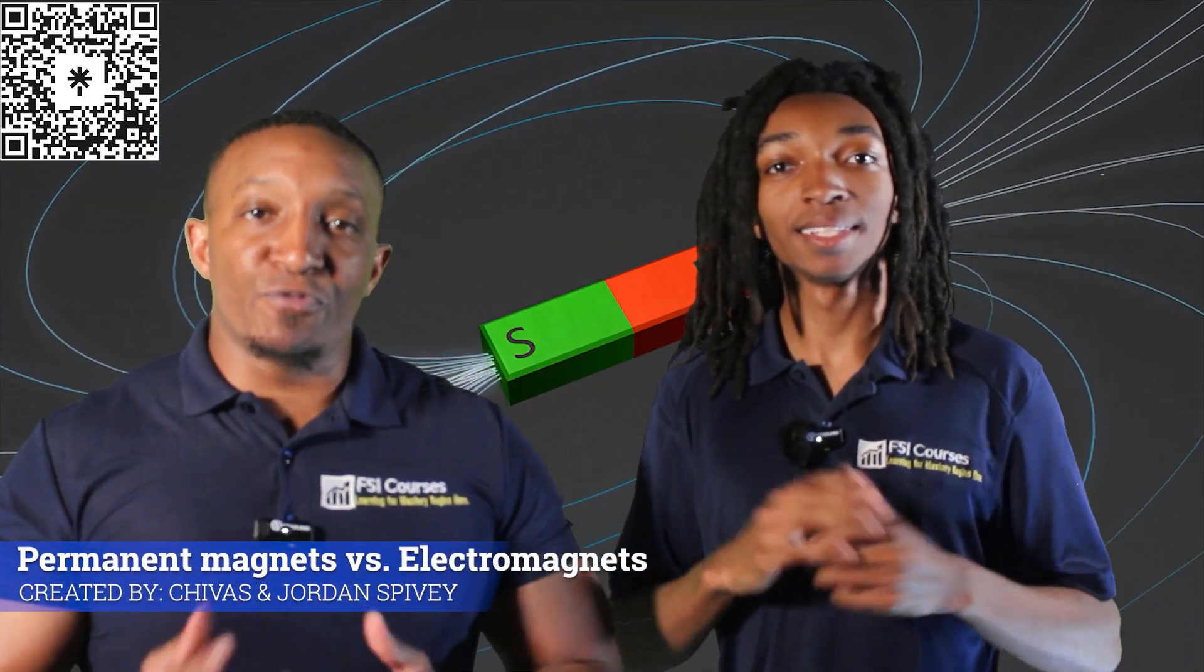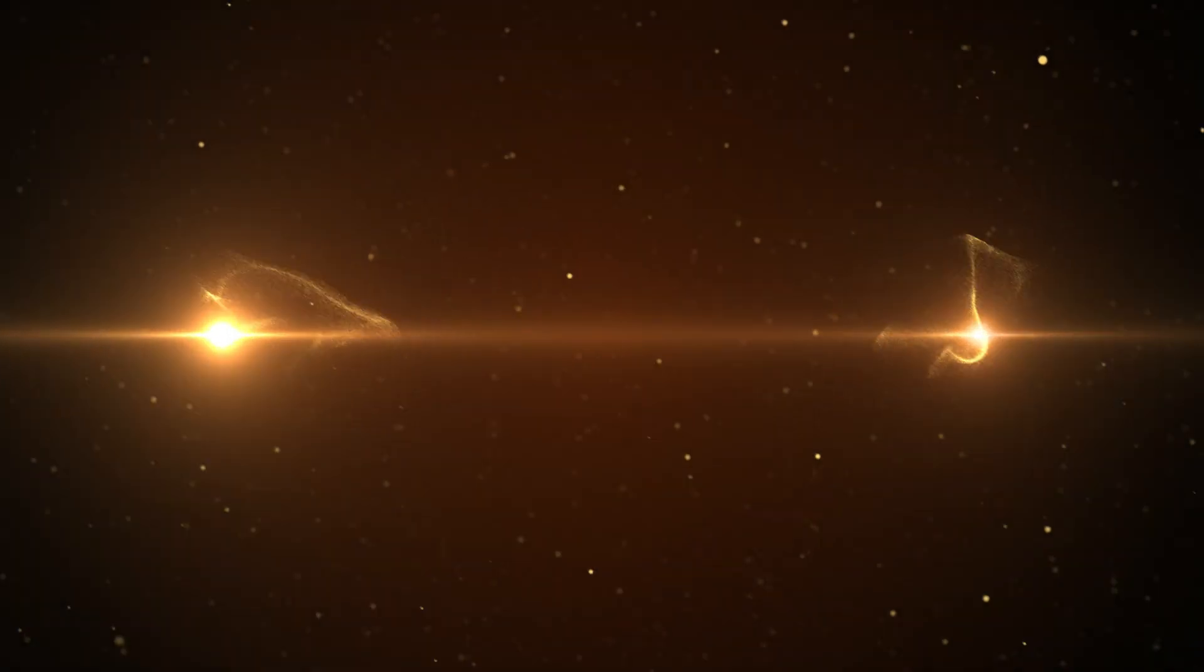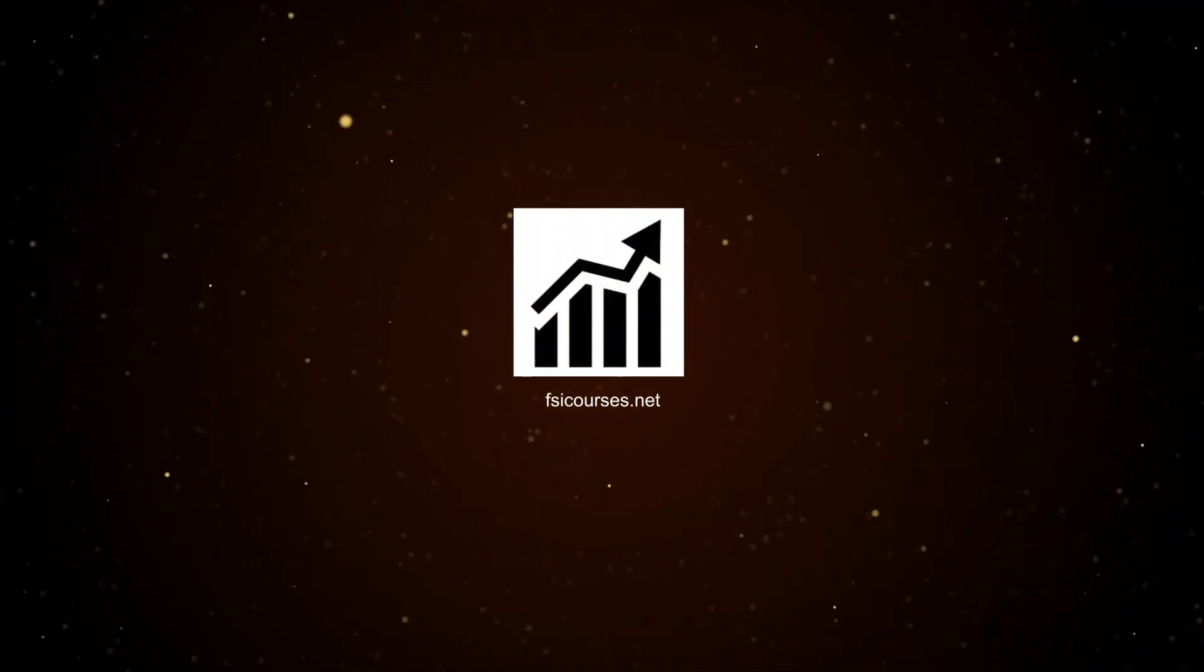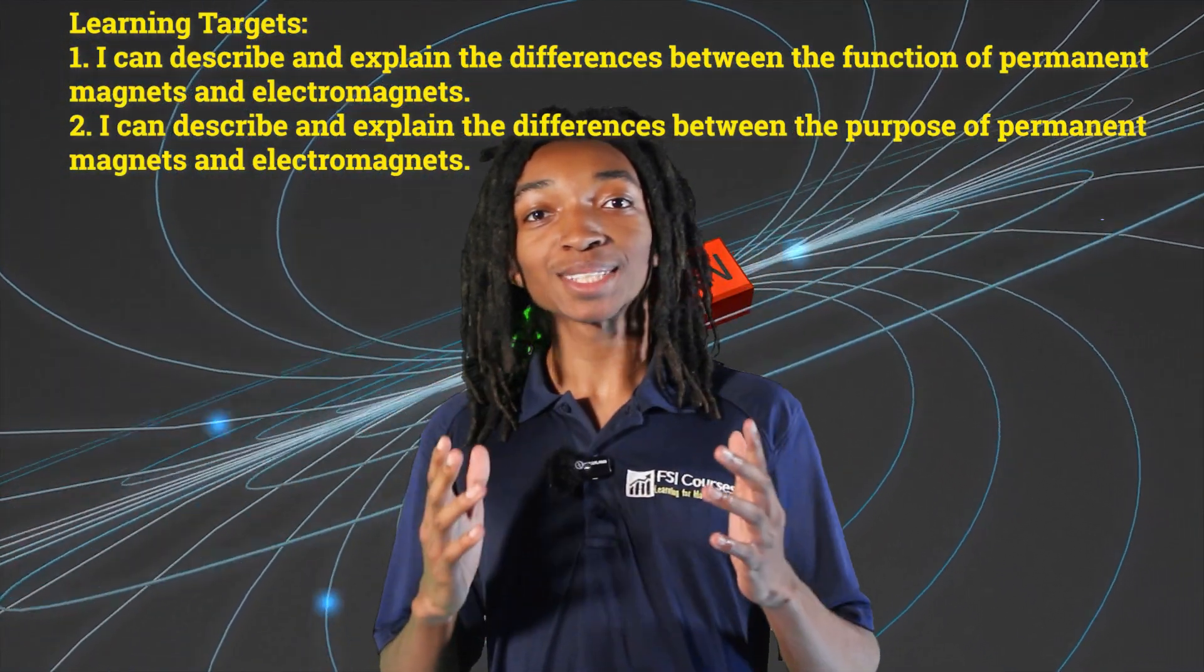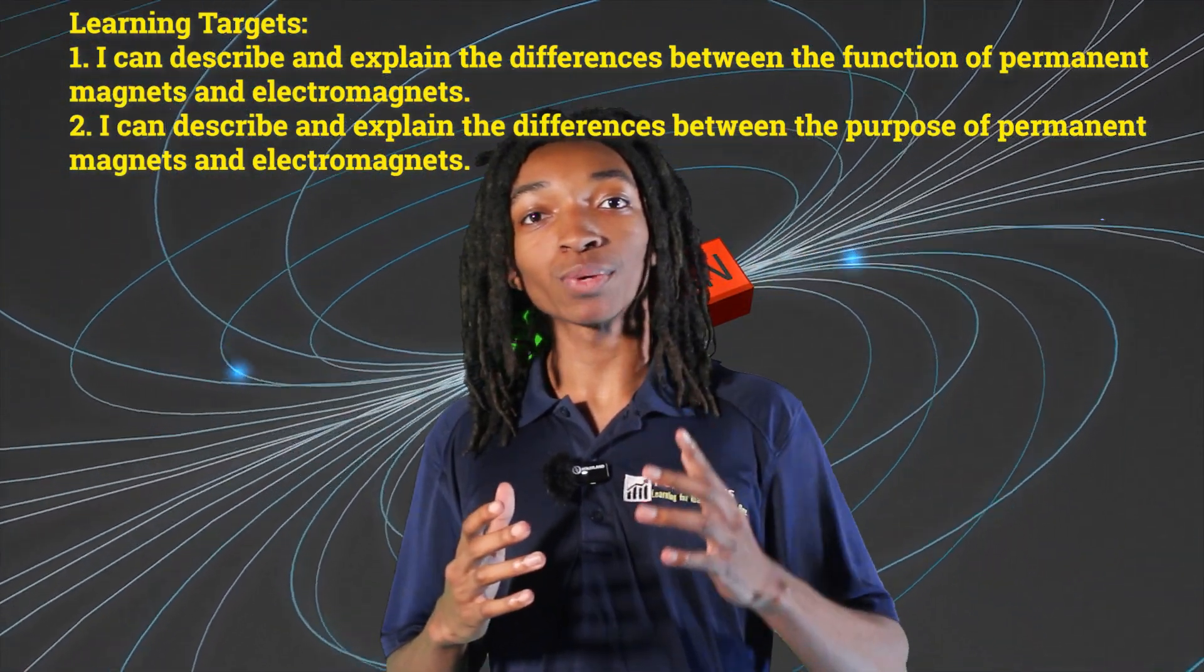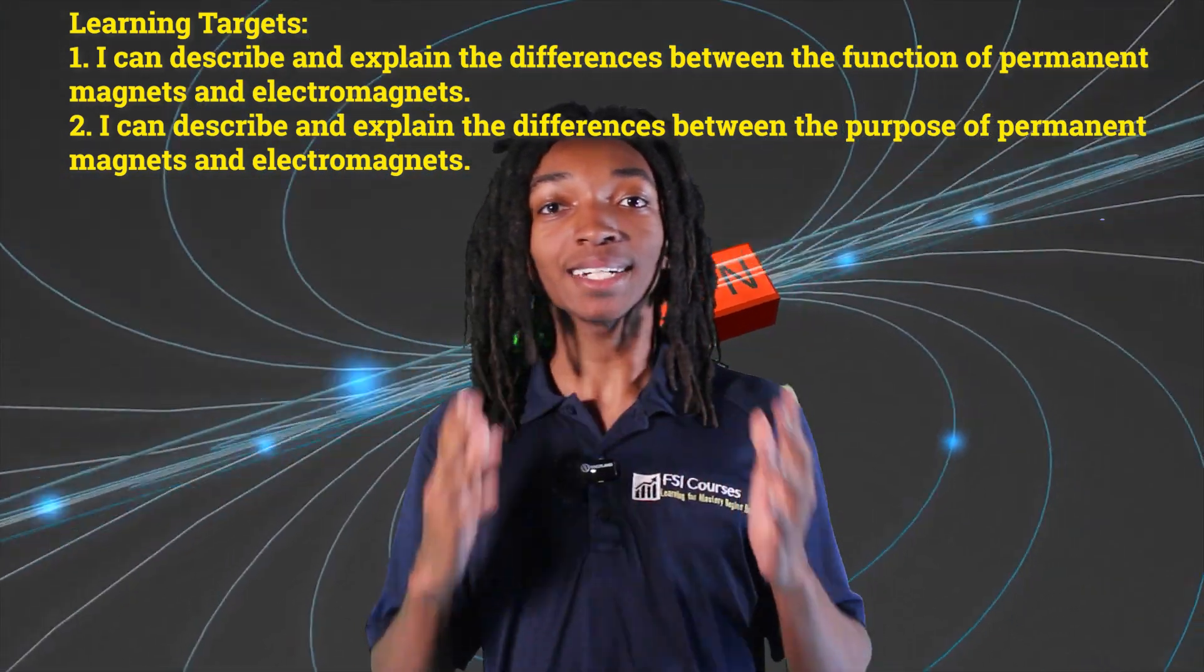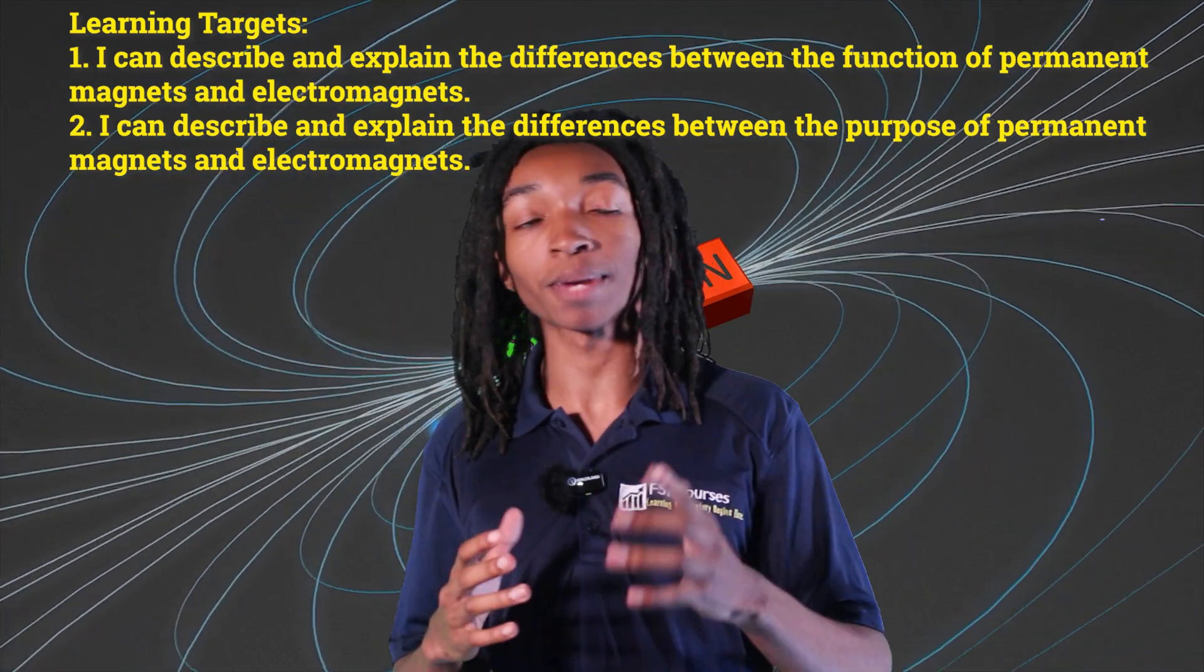In today's video we will describe and explain the differences in function and purpose of permanent magnets and electromagnets. So let's do this. Our learning targets for today are number one, I can describe and explain the differences between the function of permanent magnets and electromagnets. And number two, I can describe and explain the differences between the purpose of permanent magnets and electromagnets.